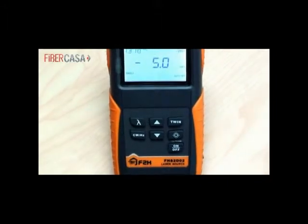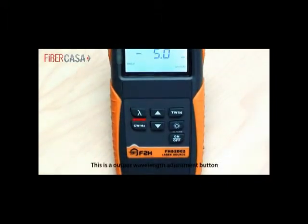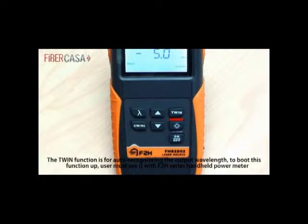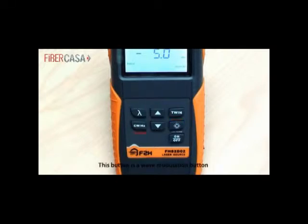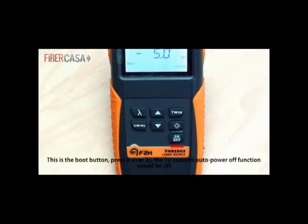Button function. This is the output wavelength adjustment button. This is output power up adjustment button, 0.1 dB per step. The trim function is for auto-recognizing the output wavelength. To boot this function up, user must use it with F2H series handheld power meter. This button is a wave modulation button. This is output power down adjustment button. This is a screen backlight button. This is the boot button. Press it over 2 seconds. The 10 minute auto power off function would be off.